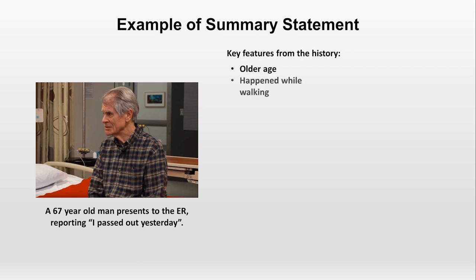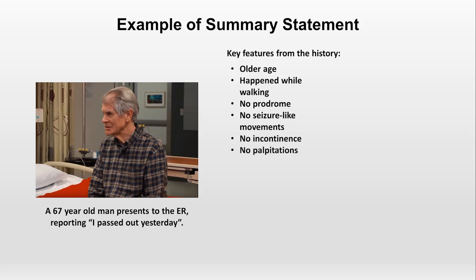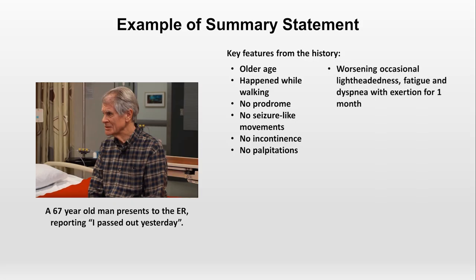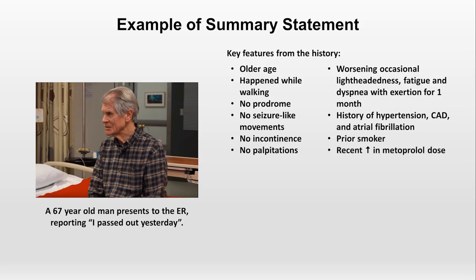He is of older age. He passed out while walking. There was no prodrome before yesterday's episode. His wife, who was with him at the time, observed no seizure-like movements. He experienced no urinary or fecal incontinence that would suggest a seizure, and no palpitations. On the other hand, he has experienced worsening occasional lightheadedness, fatigue, and dyspnea with exertion for one month prior. He has a past medical history of hypertension, coronary artery disease, and atrial fibrillation. He is a prior smoker, and he recently increased his metoprolol dose, a common medication used for blood pressure control in patients with concurrent heart disease or atrial fibrillation.